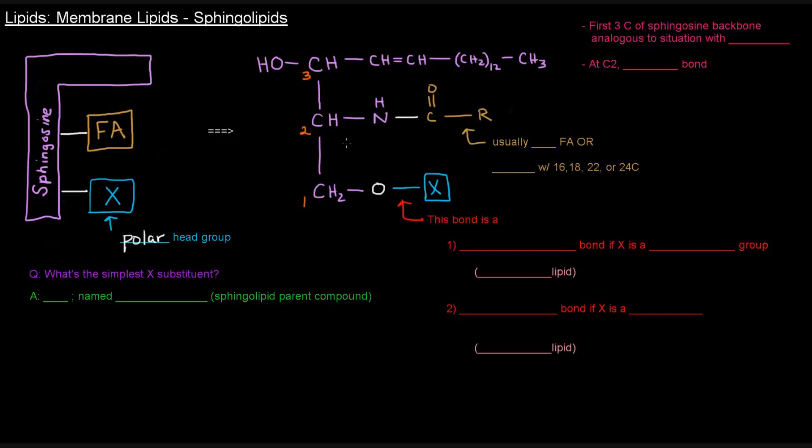Those first three carbons of the sphingosine backbone are analogous to the situation with glycerol. So glycerol had only three carbons. And those three carbons were the backbone of the structures of the other molecules that we've talked about thus far. Here, the first three carbons are pretty much playing the same role as the three carbons of glycerol.